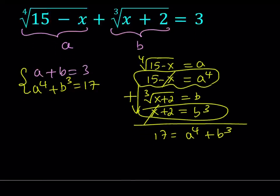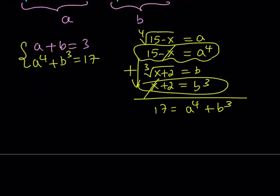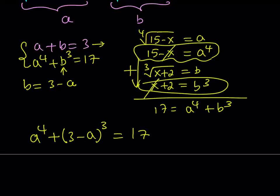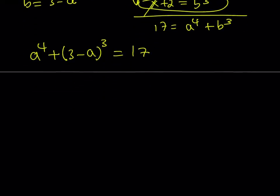So let's go ahead and use substitution here since elimination is not possible. Let's go ahead and isolate b here. If we do we get b equals 3 minus a. And then let's go ahead and substitute that in the second equation. And that gives us a to the fourth power plus the quantity 3 minus a to the third power equals 17. So this is the equation we're going to solve. It's in a single variable but it's a quartic equation as opposed to a radical equation. So it's a polynomial equation and we should be able to solve it.